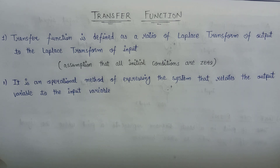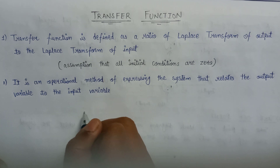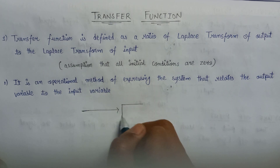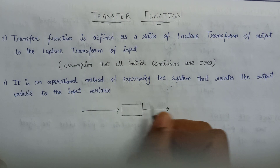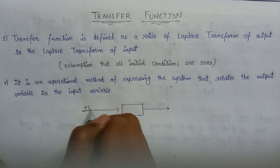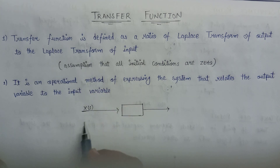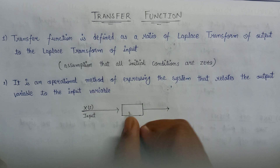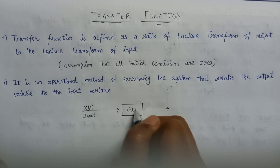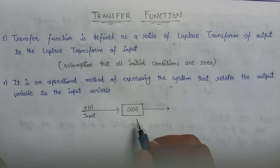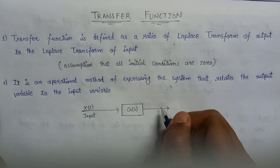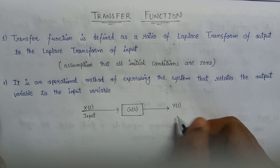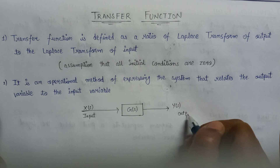Let us understand the transfer function with the help of a block diagram. Here, x(s) is applied as an input to the control system, and the open loop transfer function G(s) represents the gain of the system. The output obtained from this control system is y(s).